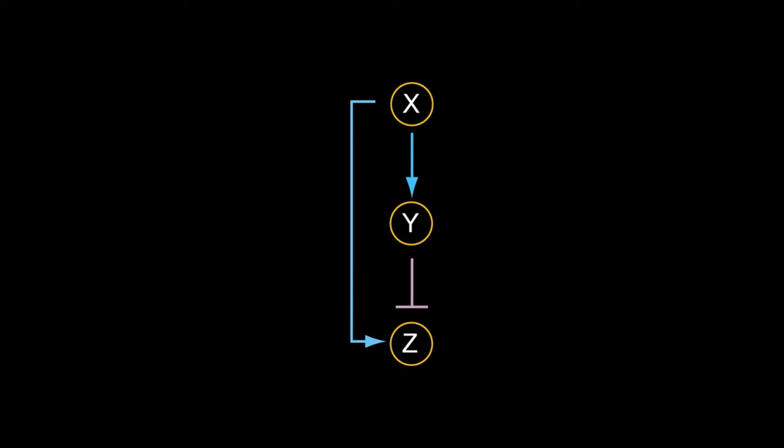This one is incoherent feed-forward. The path X to Y to Z is an inhibitory path, but the direct path from X to Z activates Z. Therefore, the sign of control of these two paths are opposite or incoherent.